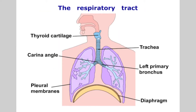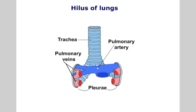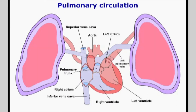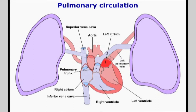The primary bronchi then pierce the parietal and visceral pleura to enter the left and right lungs. There are successive divisions of the bronchi until the respiratory bronchioles enter the alveolar sacs. The blood supply to the lungs is by the left and right pulmonary arteries, and oxygenated blood is returned to the heart via the left and right pulmonary veins.